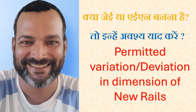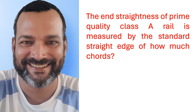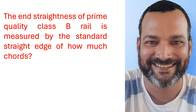In this video we are going to ask you some questions based on permitted variation or deviation in dimension of new rails. The end straightness of prime quality Class A rail is measured by the standard straight edge of 2.0 meter chord. The end straightness of prime quality Class B rail is measured by the standard straight edge of 1.5 meter chord.